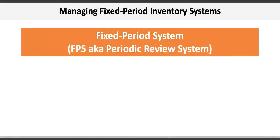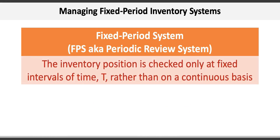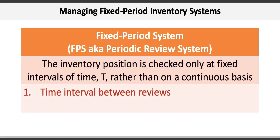The second type of inventory system is a fixed period system, or FPS, also known as a periodic review system. Here the inventory position is checked only at fixed intervals of time T rather than on a continuous basis. A vending machine might follow a fixed period system where it's restocked on a regular basis as the owner makes regular rounds. The two important features are the time interval between reviews and the replenishment level — how much to order.